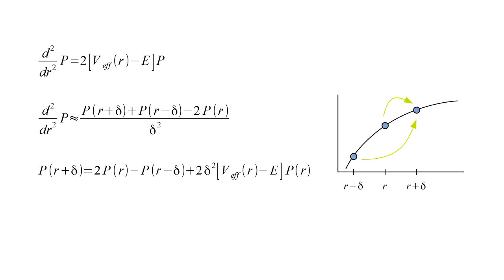p is zero at zero, and p at delta can be set to an arbitrary small number, since at the end we can scale the entire result as needed. Then we can run out this formula to any r value we choose.